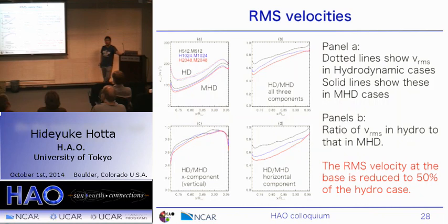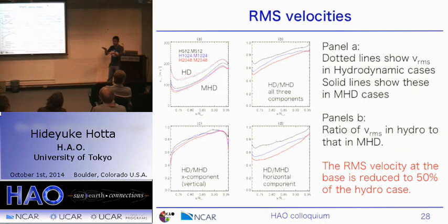V_phi should be larger than V_r in order to get the right angular momentum transfer. In the global setting with rotation it can be achieved — rotation can generate banana cell and then generate V_phi faster than V_r. In this calculation I don't include rotation, so I need to confirm which is faster in the global setting. It is difficult to discuss from this calculation alone.